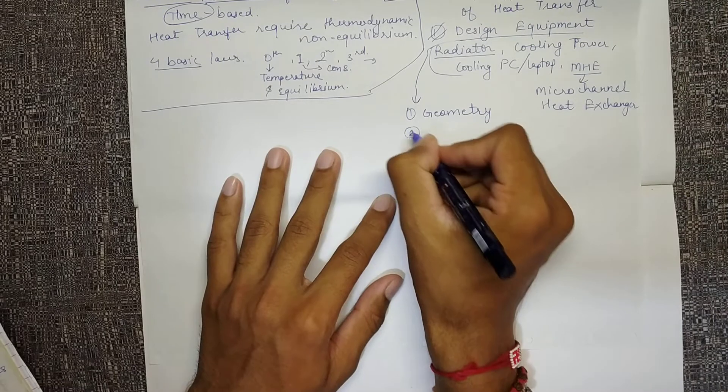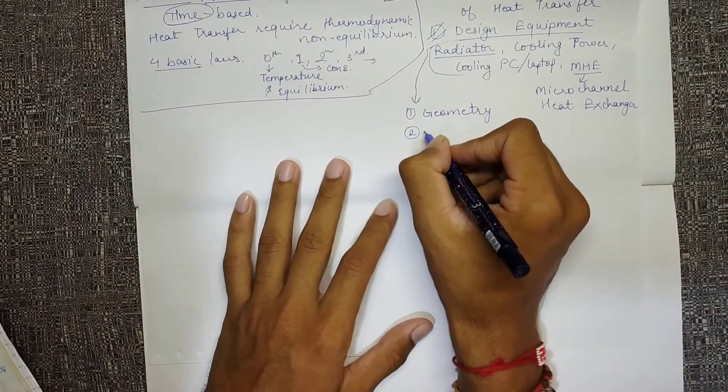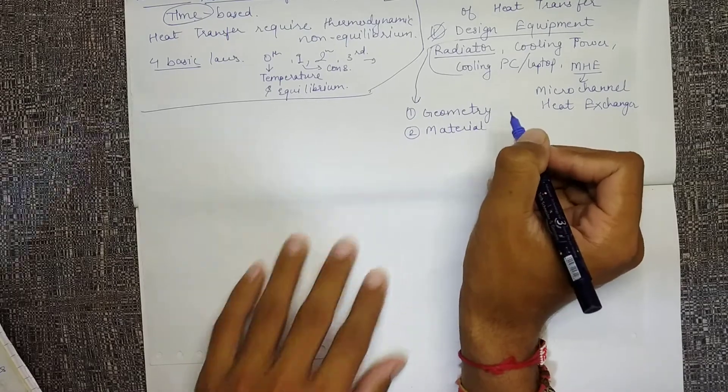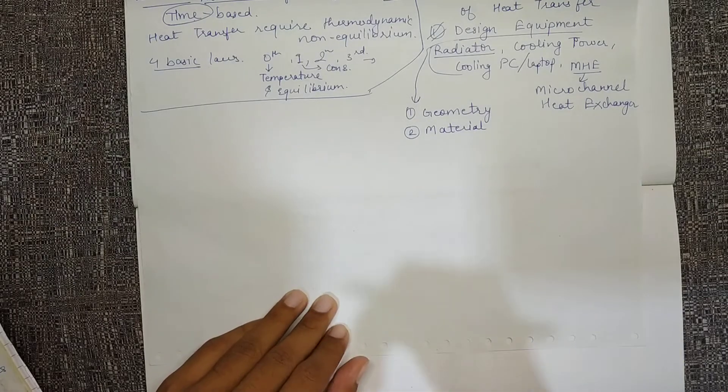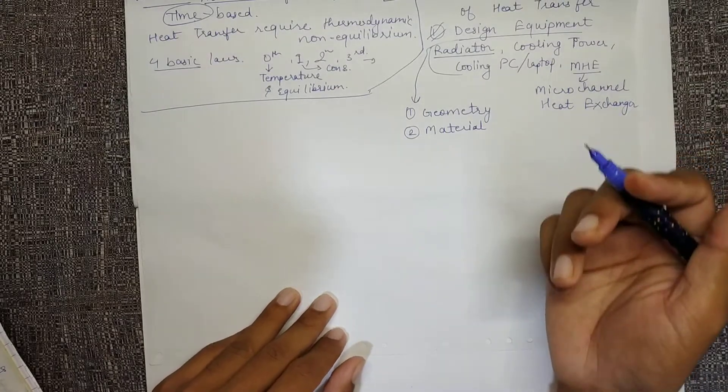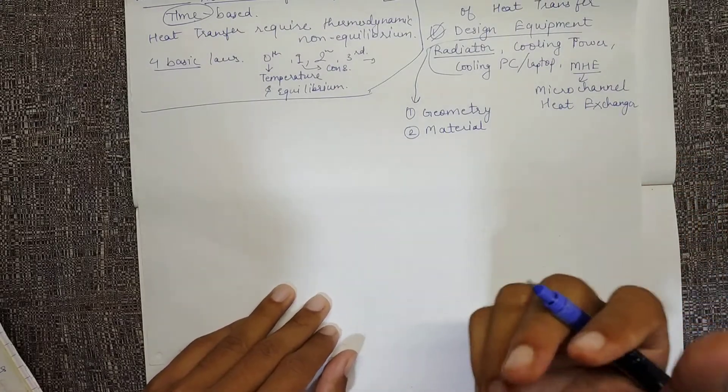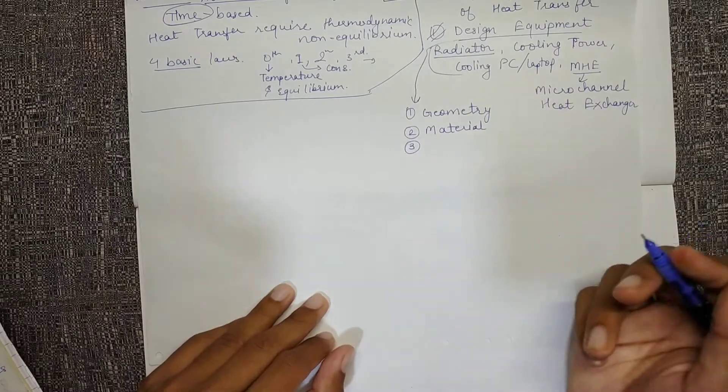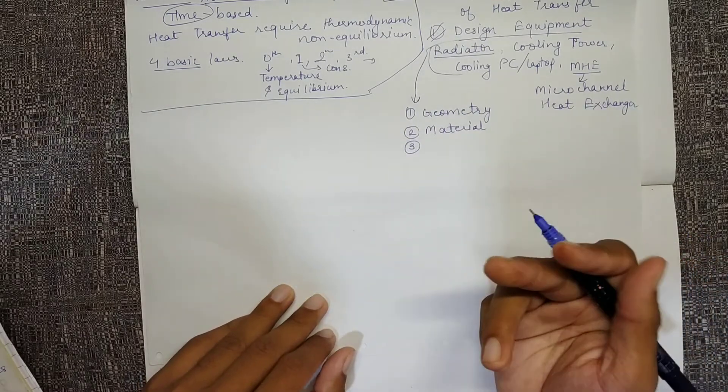Second, we may need to find out the material which we need to use. We may need to cool it faster, we may need to heat it faster, or we may not let it heat faster. So accordingly we will choose what type of material we want. Aluminum has a higher thermal conductivity.